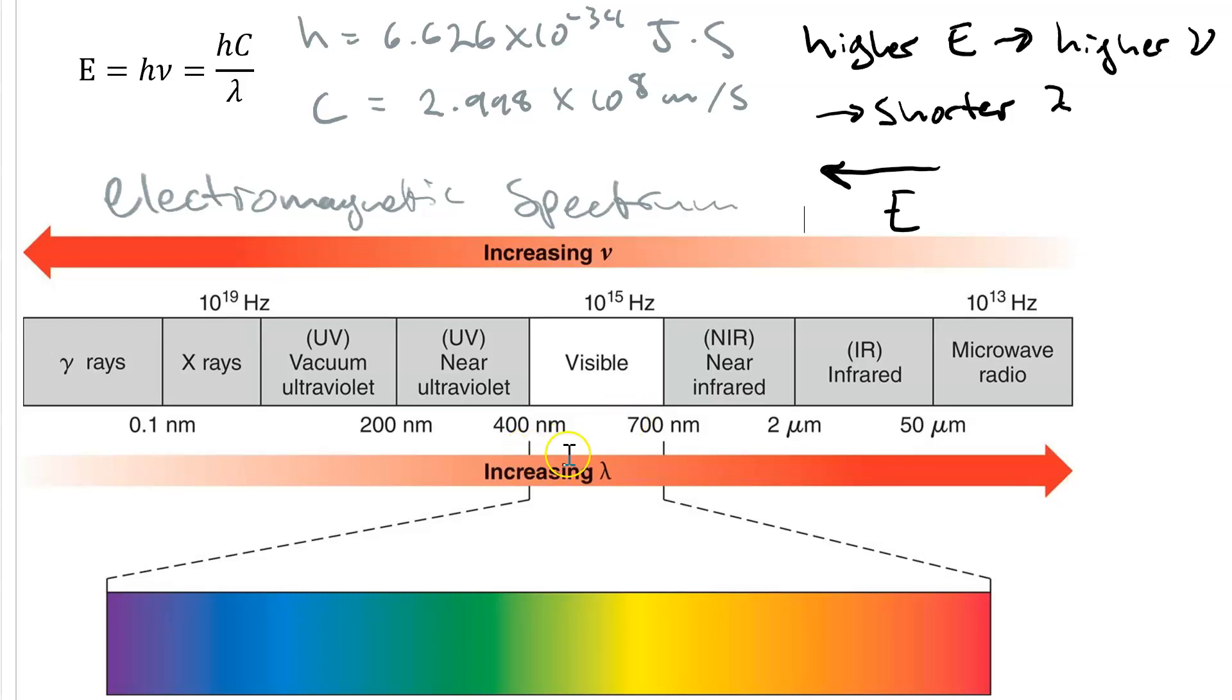The visible region is a very small portion right in the middle. The high energy side of visible is violet at 400 nanometers, the shortest wavelength our eyes can pick out. And the low energy side of visible is red at 700 nanometers, the longest wavelength of light that we can pick out. Over here at lower energy than visible is the infrared.